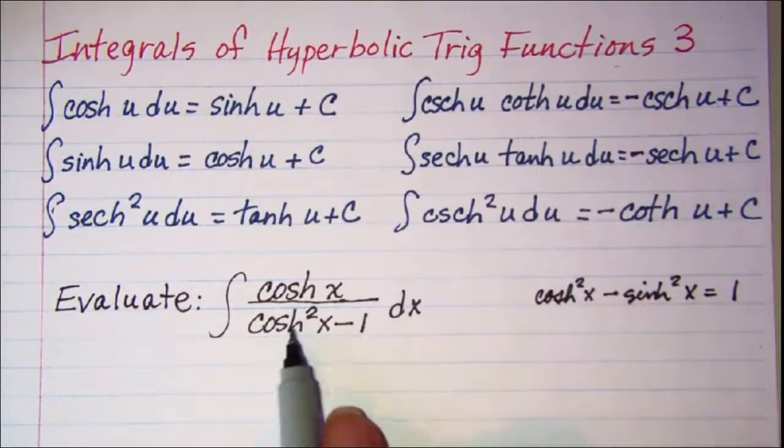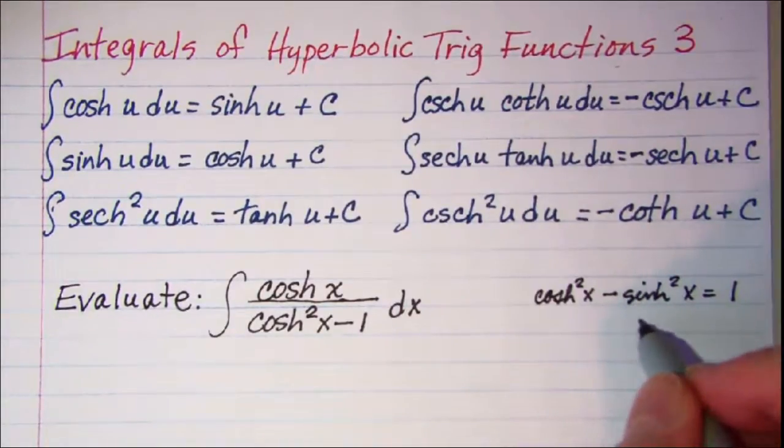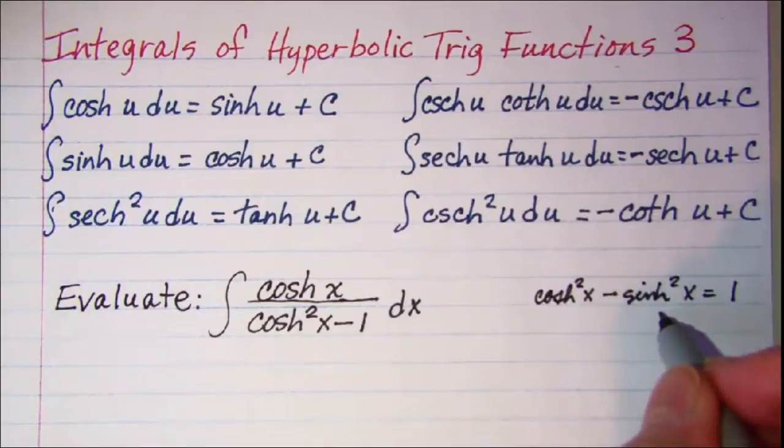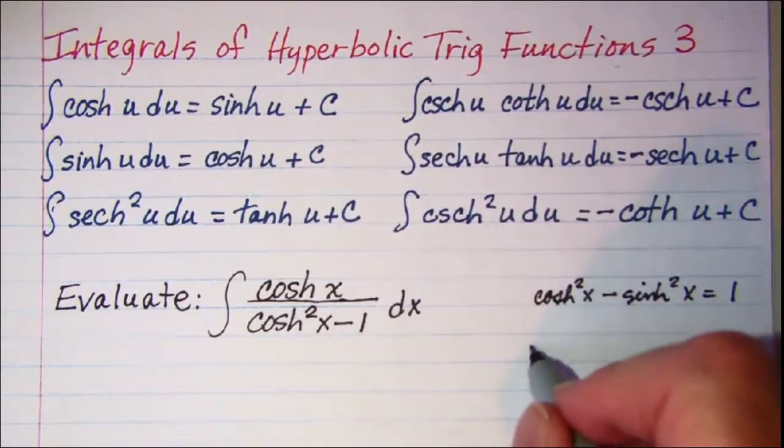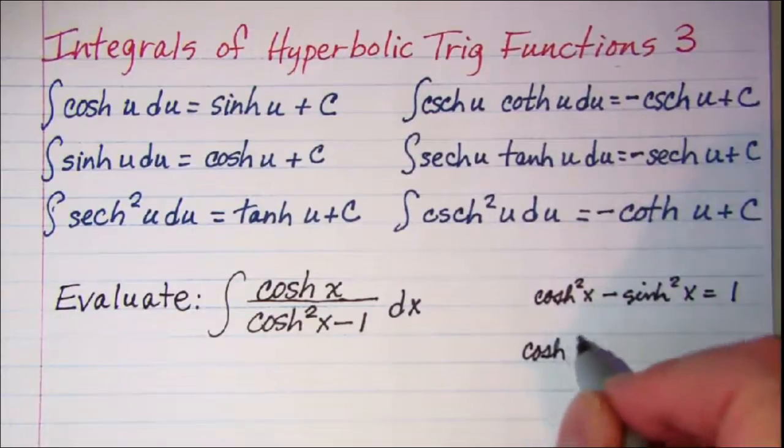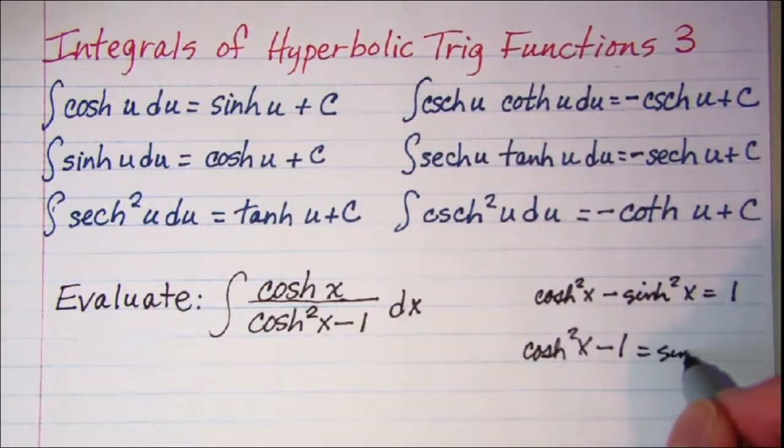And I need hyperbolic cosine squared minus 1, so I am going to add hyperbolic sine squared to both sides and then I am going to move my 1 over so that I have hyperbolic cosine squared of x minus 1 is equal to the hyperbolic sine squared of x.